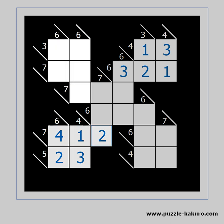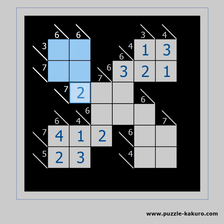Let me show you a trick. We can find out the sum of these 4 cells using the horizontal clues — it should be 10 because of the 3 and the 7 horizontally. Now we can find the sum of these 5 cells using the vertical clues: it should be 12, which is 2 more than the darker 4 cells. This means that the lighter cell should be 2.